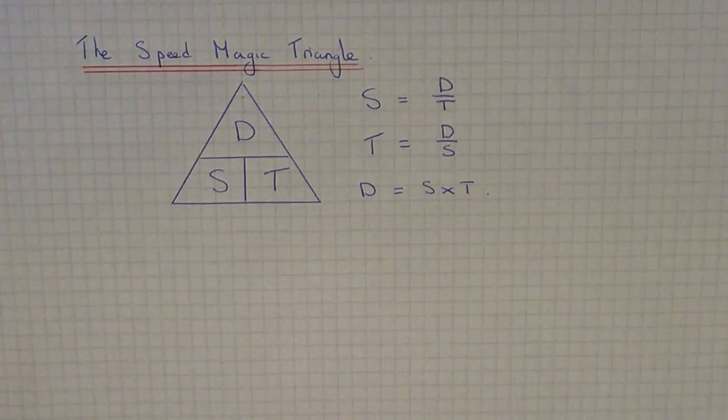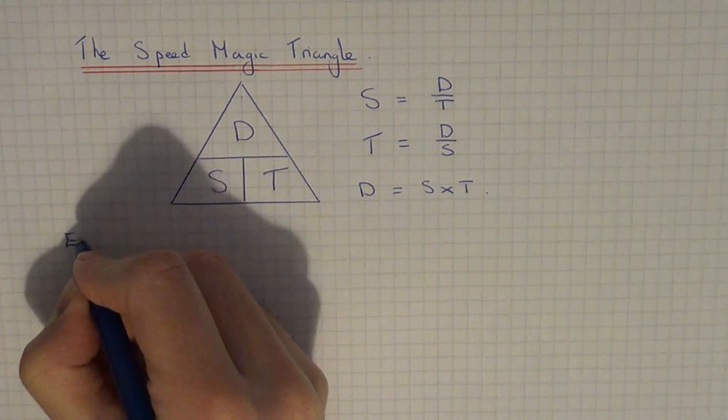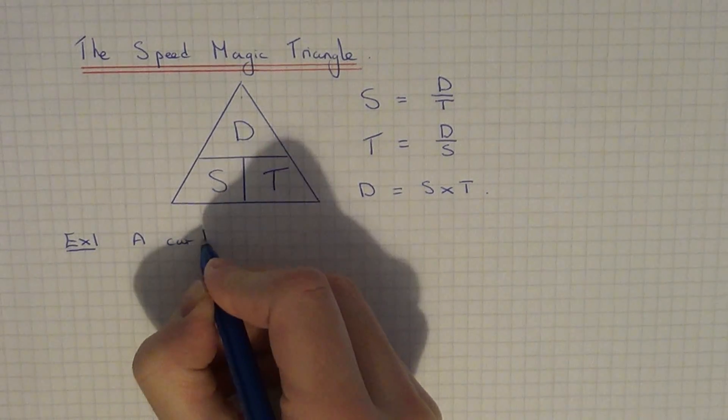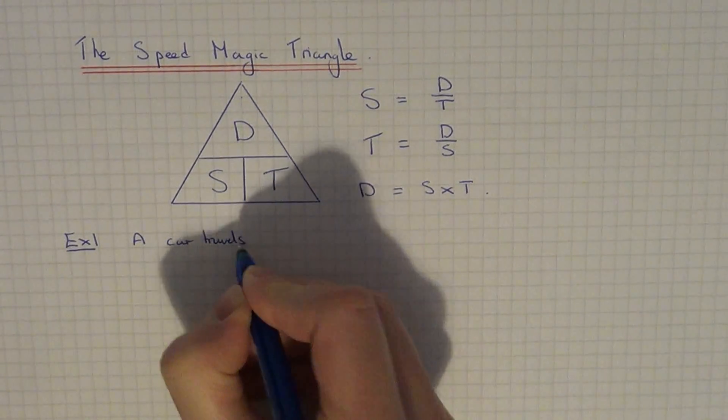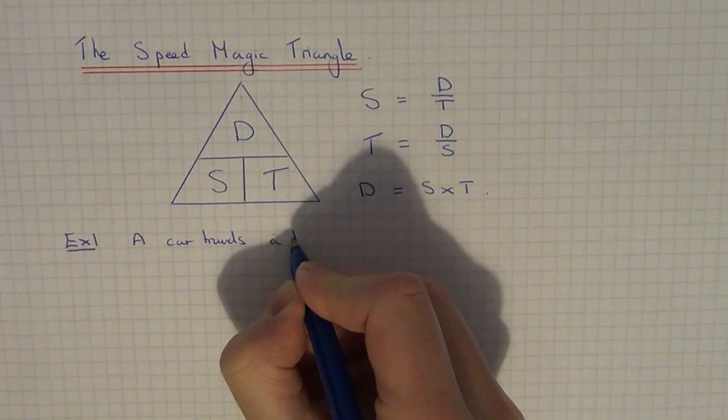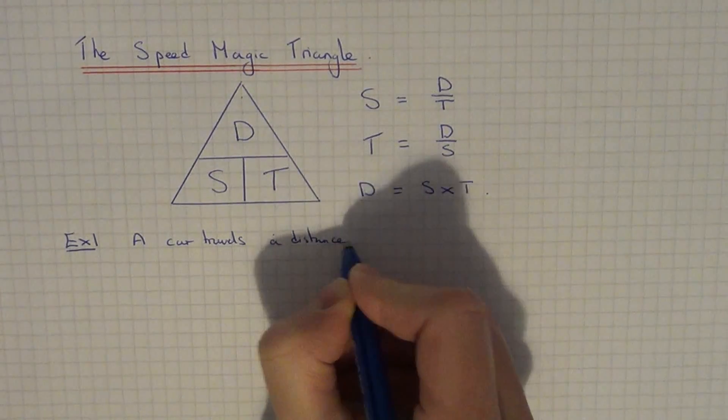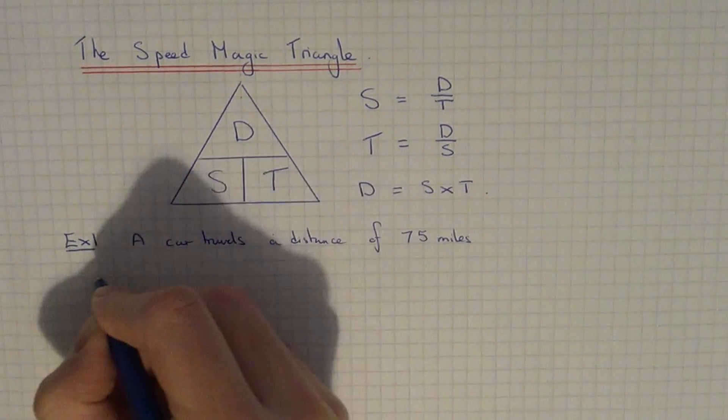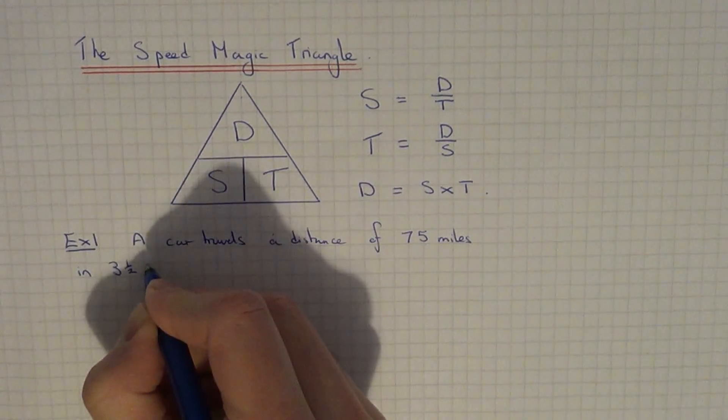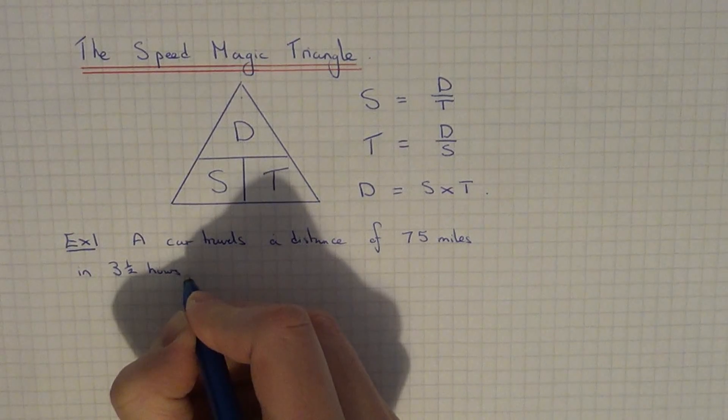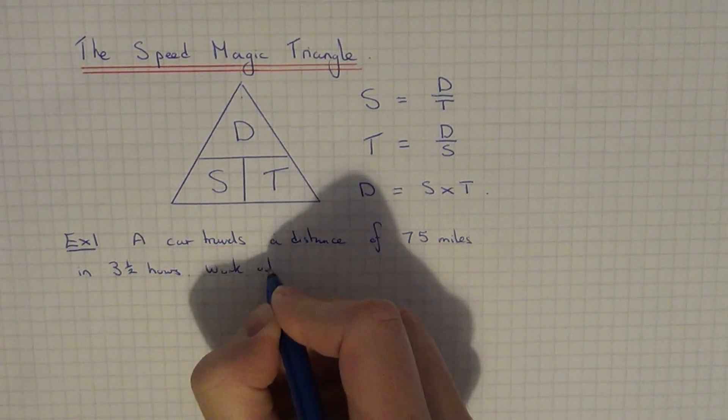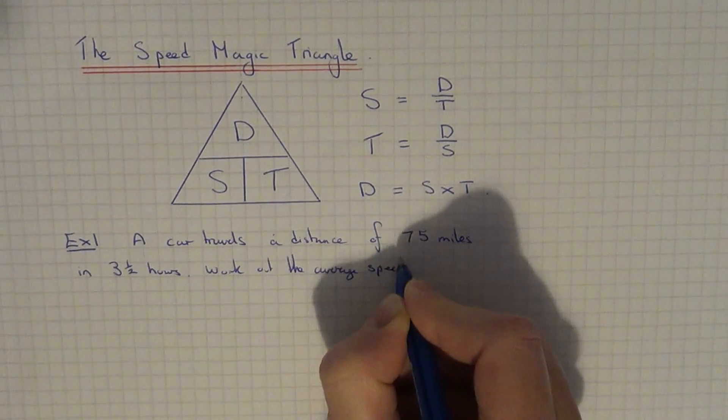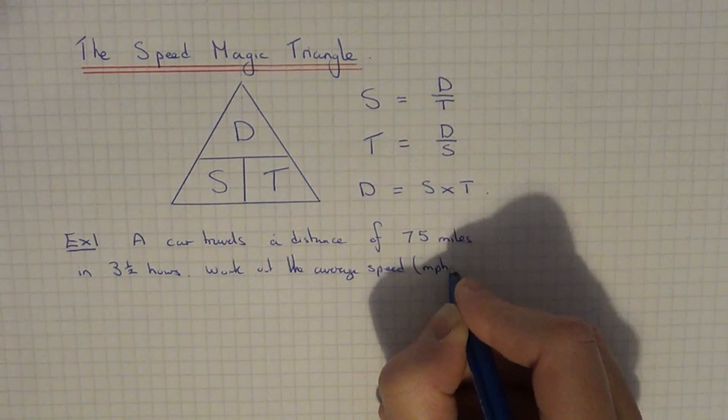So let's look at a simple example. Example one: A car travels a distance of 75 miles in three and a half hours. Work out the average speed of the car and give your answer in miles per hour.